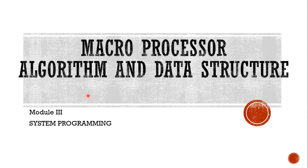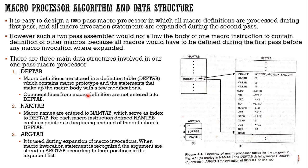It is easy to design a two-pass macro processor in which all macro definitions are processed during the first pass and all macro invocation statements are expanded during the second pass. In a two-pass algorithm the input program is read twice — in the first pass all macro definitions are processed, and in the second pass all macro invocations are expanded.